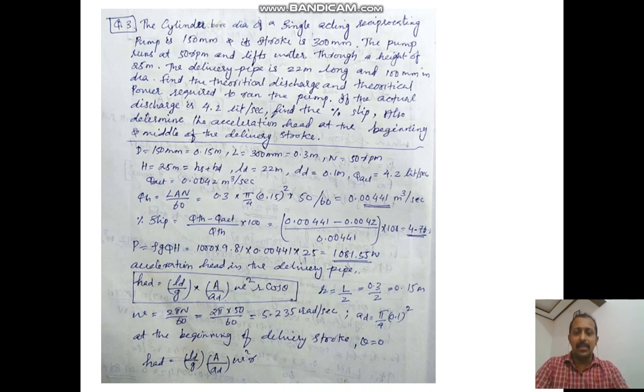The bore diameter of the reciprocating pump, capital D, is 150 mm or 0.15 meters. The stroke length L equals 2r, so L is 300 mm, that is 0.3 meters. The speed: the pump runs at 50 rpm, so N is 50 rpm. Then H, the total head, is 25 meters, so Hs plus Hd equals 25 meters.